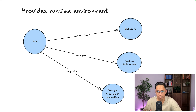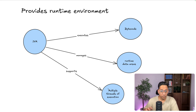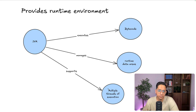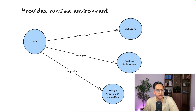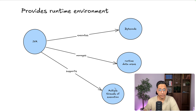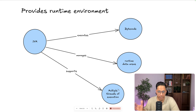JVM gives you the runtime environment; it executes something called bytecode and manages the runtime data areas — where data is stored at runtime. It also supports multiple threads of execution. Concurrency is one of the strongest parts of the JVM, because it provides you so much. Of course, there are some gotchas or internal details you must be aware of when implementing concurrency structures, using locks, and avoiding common bad patterns. But we'll get to that in later episodes.